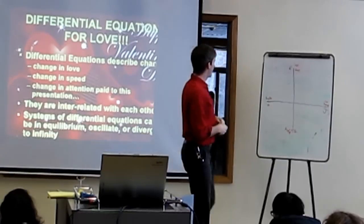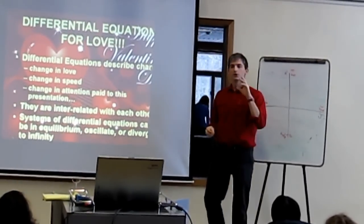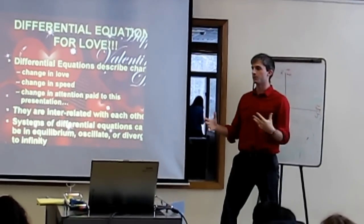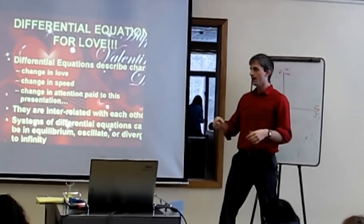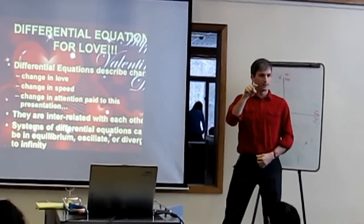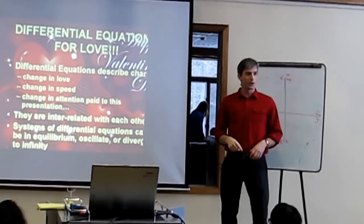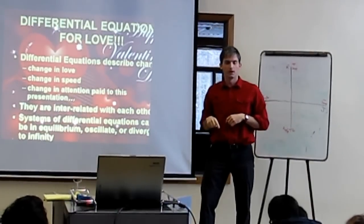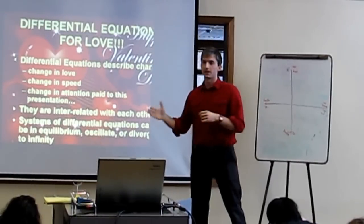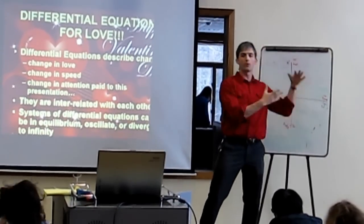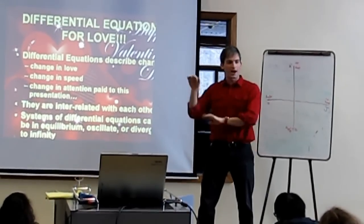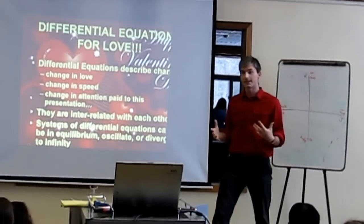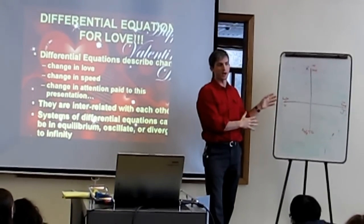There are all these interrelated differential equations, and they come in different kinds. You can get ones that are in equilibrium — you find the perfect balance between how engaged a teacher I am and how much attention you pay, and it circles around one final point. Or they can oscillate, going back and forth forever. Or they can spiral off into infinity, or into negative infinity. There are all these different options for what can happen when you put differential equations together.